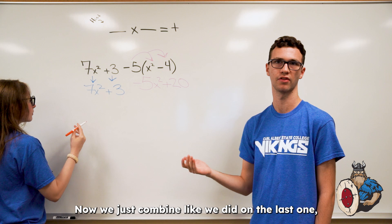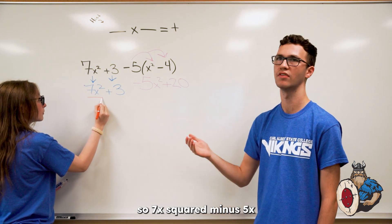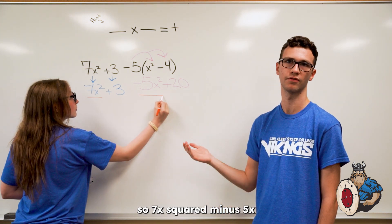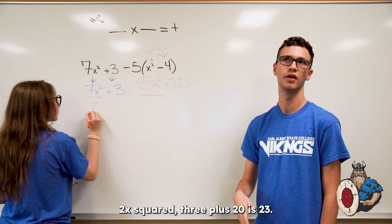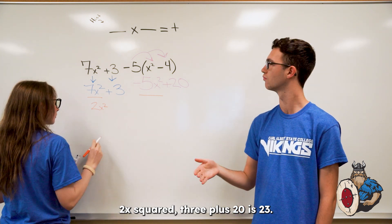Now, we just combine like we did on the last one. So, 7x squared minus 5x squared is 2x squared. 3 plus 20 is 23.